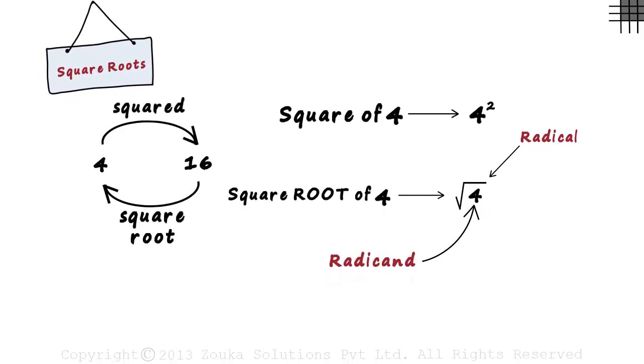But here's a simple way to remember it. We know that 5 squared is 25. This, when transposed to the other side, becomes a square root. So we can say that the square root of 25 is 5.